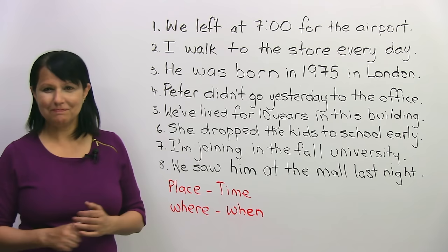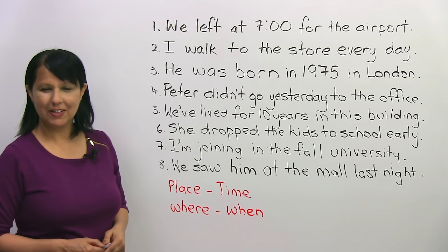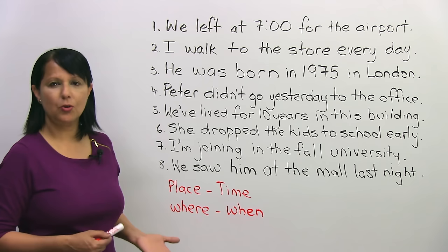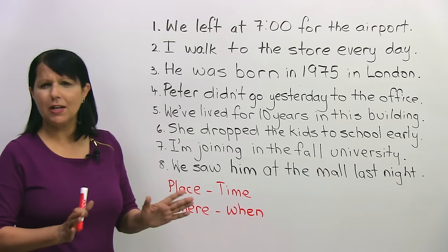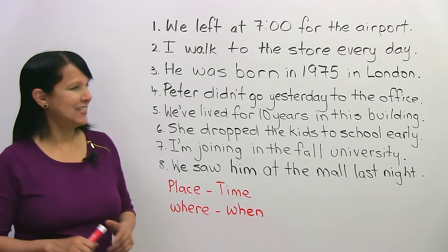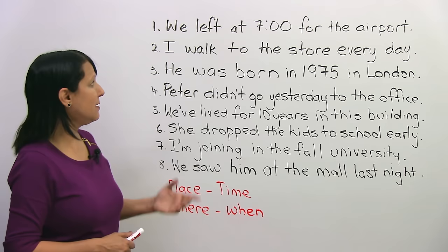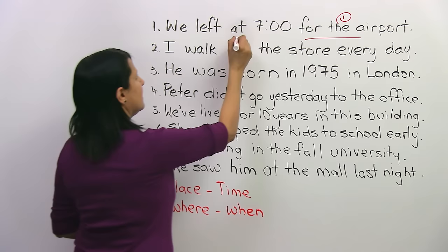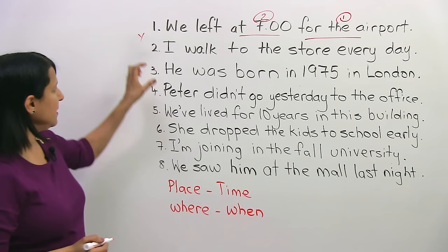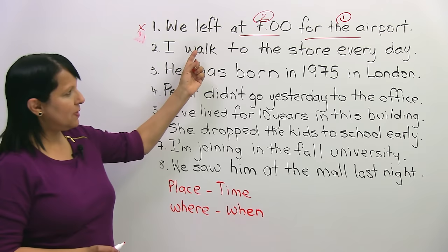Number one: 'We left at seven o'clock for the airport.' Is that right or wrong? The principle is place, then time. We left where? For the airport. When? At seven. So this one was wrong. It should be: 'We left for the airport at seven.'